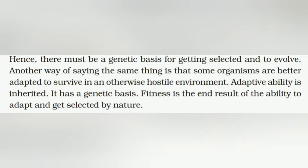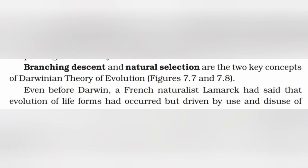Some organisms are better adapted to survive in an otherwise hostile environment. Adaptive ability is inherited — adaptations are inherited, and if one organism is adapted, those traits are carried forward to future generations. It has a genetic basis. Fitness is the end result of the ability to adapt and get selected by nature. Branching descent and natural selection are the two key concepts of Darwinian theory of evolution, as seen in figures 7.7 and 7.8.